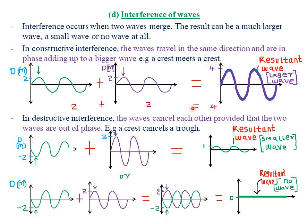Adding an amplitude of two to another amplitude of two simply gives us positive four. So the crest of the first wave combines with the crest of the second wave to give us a much larger crest with an amplitude of four. This is what we call constructive interference — the two waves meet and merge to give us a large wave.